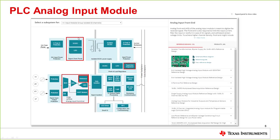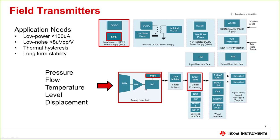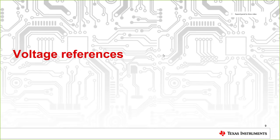A couple more block diagrams tell the same story: wherever you have power — such as a PLC input module — you may need a shunt reference or supervisor. Anytime you have a signal chain needing high performance, low noise, and low temperature drift, consider using an external reference. Our parts are used in a wide variety of applications: industrial, automotive, medical, and power electronics — you'll find our building block parts used everywhere.